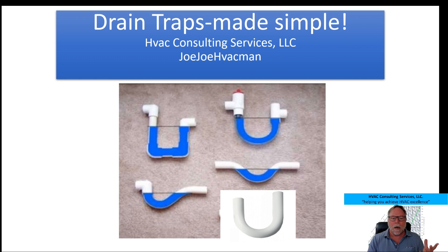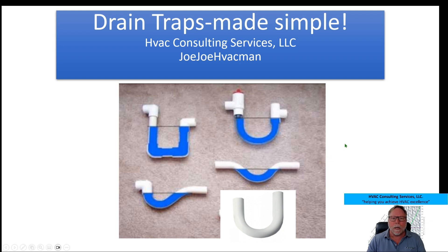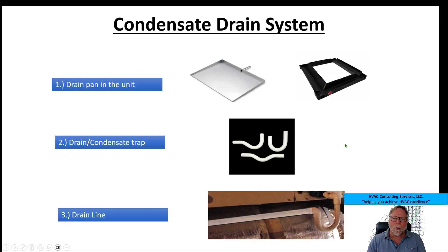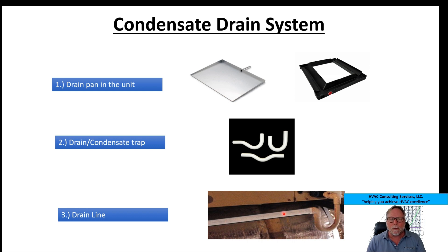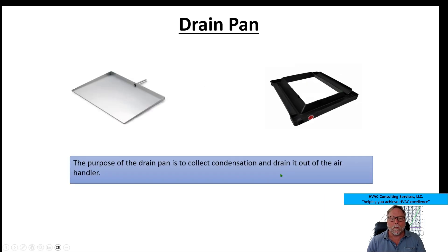So which one do we use? We've got this pre-built one or one you build in the field. This is an easy trap. This is what we call a run trap. This is a P-trap, and this here is a J-trap. The question is which one do you use in what application. Let me run through the condensate drain system itself — it consists of some type of drain pan, some of the old ones had metal, most now are composite, we've got our selection of drain traps, and then we've got our drain line that comes off the drain trap.